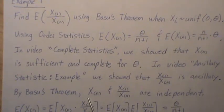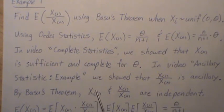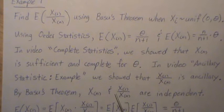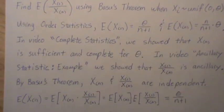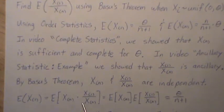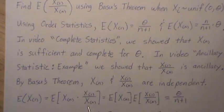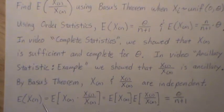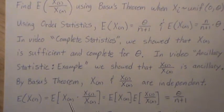So by Basu's theorem this complete sufficient statistic and the ancillary statistic are independent. Now when we look at the expected value of the minimum order statistic, if we multiply and divide by Xn the largest order statistic we're still left with this.